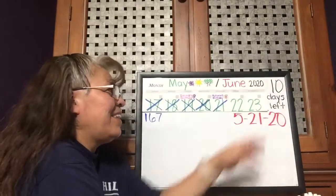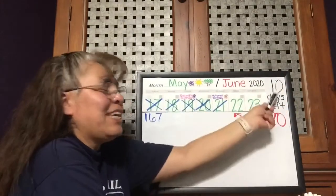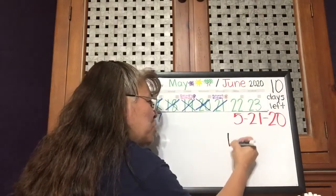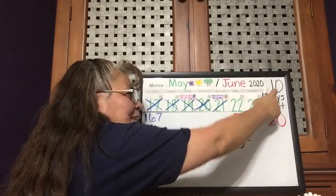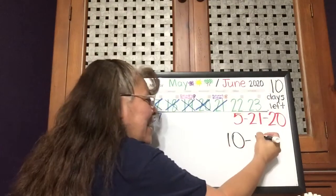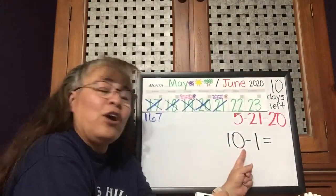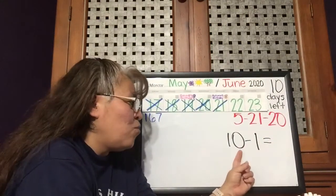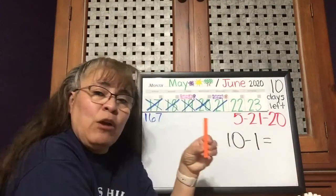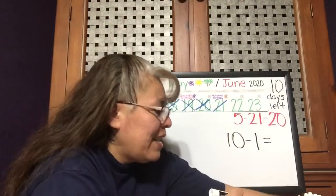So looking at our numbers now of how many days — every day we keep taking one away. So now it's going to be easier to go backwards. How many days did we have yesterday? 10. We have 10 and we take one away. But there are no ones, so we have to break up that 10.